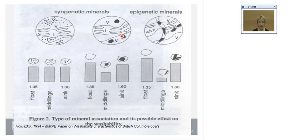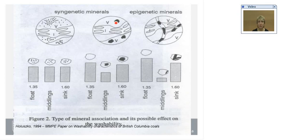In terms of epigenetic minerals — where minerals are in cracks — this is the easiest type to remove, because once you crush the coal to certain sizes these minerals are released, which helps in removing the mineral matter. If you have larger grains of pyrite or other mineral matter, these would contribute to middings. However, if you crush the coal to a certain size, you'll be able to more efficiently remove it from your coal.